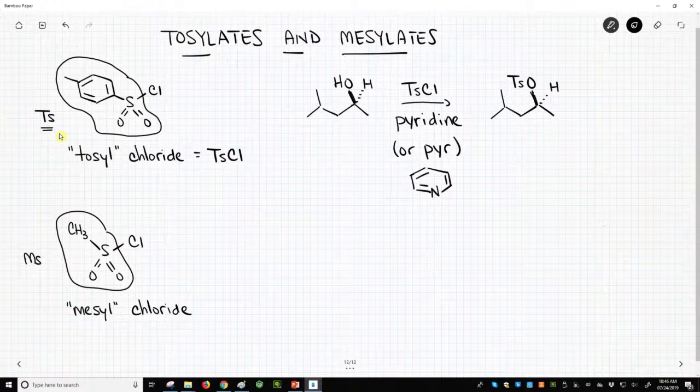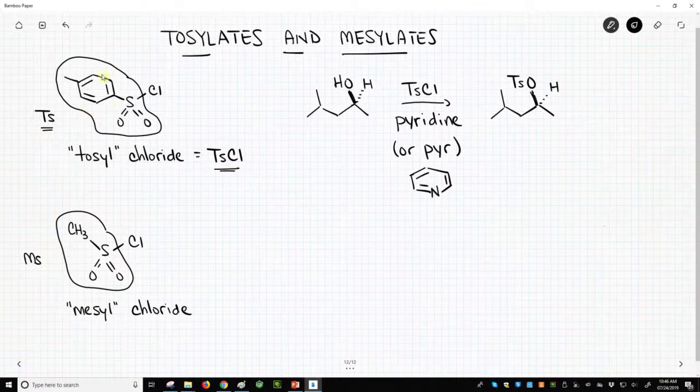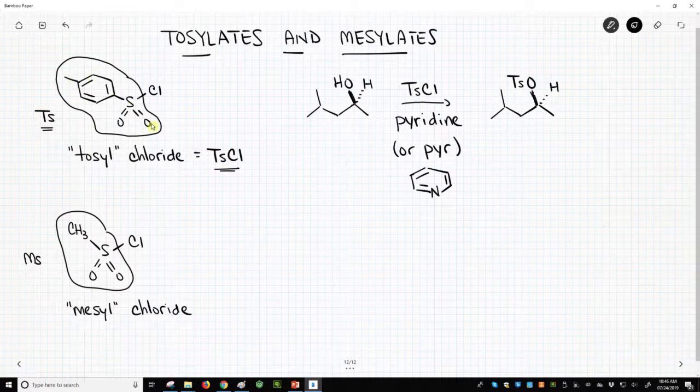It's capital T, lowercase s. So tosyl chloride is TsCl, and that saves us from having to draw the structure. However, know that TS stands for that big structure.